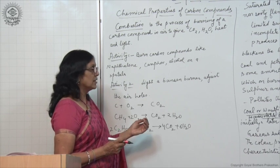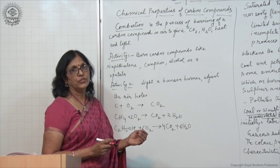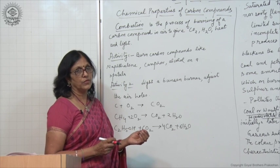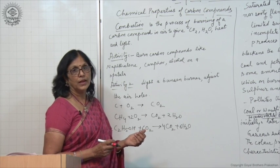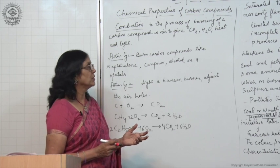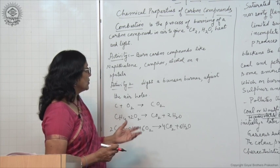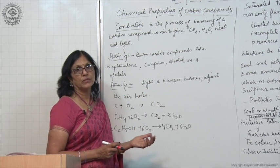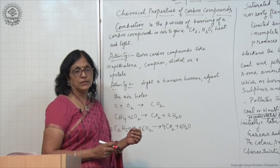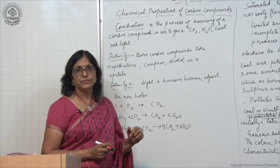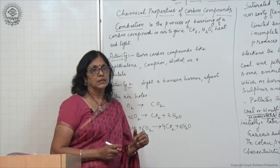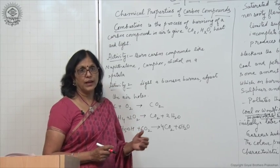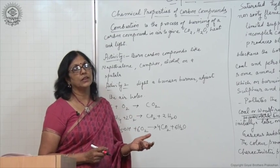When air supply is less, the color of the flame changes to yellow. When the air supply is more, the color of the flame is blue and non-smoky, non-sooty. This is the process of combustion. All the carbon compounds burn in air to produce carbon dioxide and water, and produce heat and light.